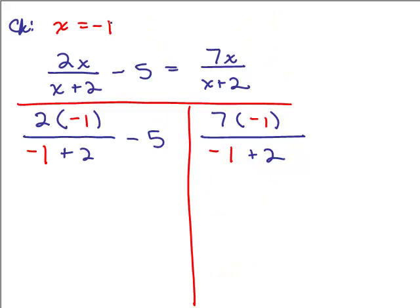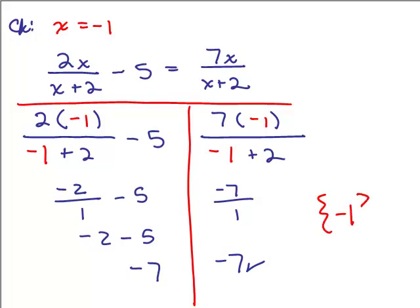So if you're going to check x equals negative 1 in this original, you would write down the equation, plug in negative 1 for x, and now we have to simplify each side. So on the left-hand side, I have to do 2 times negative 1, that's a negative 2 in the numerator, and negative 1 plus 2 is 1, minus 5. And then negative 2 divided by 1 is negative 2 minus 5 is negative 7. The right-hand side, 7 times negative 1 is negative 7, negative 1 plus 2 is 1, and negative 7 divided by 1 is also negative 7. So it does check, so our solution is negative 1.